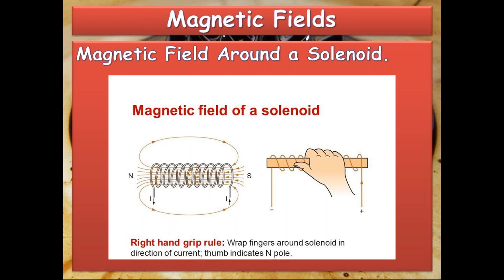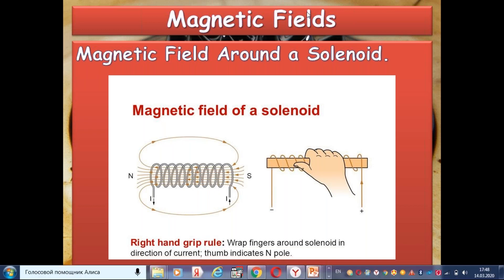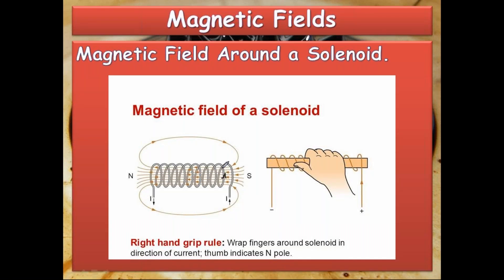Let's look at this example. The current is moving upward here. You should grab the solenoid in the direction of the current — your four fingers point in the same direction as the current, and your thumb will always show the north pole. In the first right-hand grip rule we used our curled fingers to find the magnetic field direction around a straight wire. But for the solenoid shape, the thumb shows the north pole, and obviously the opposite end is the south pole.